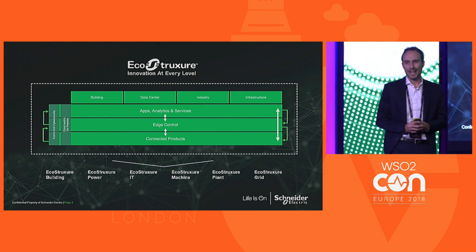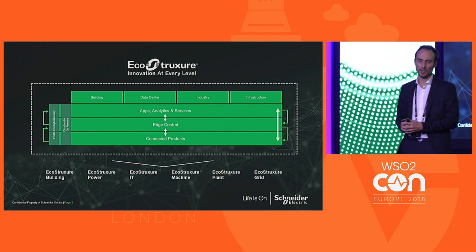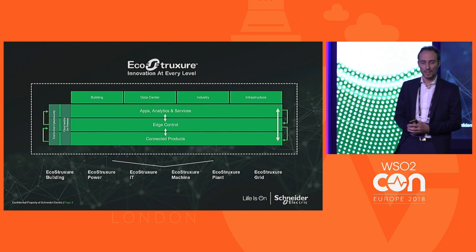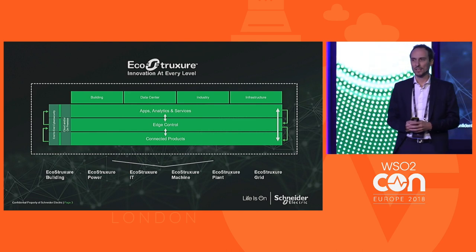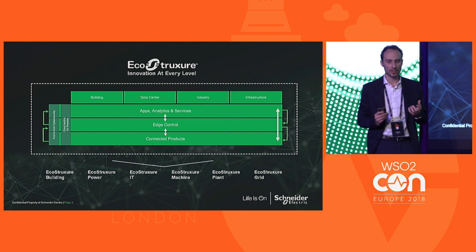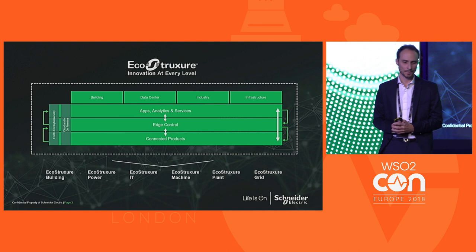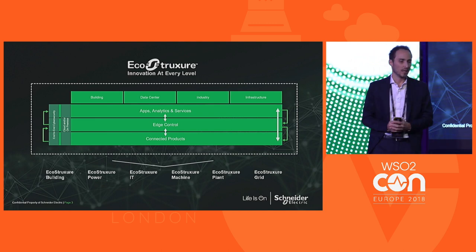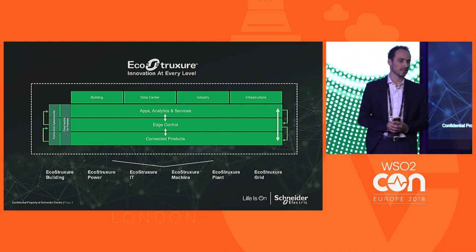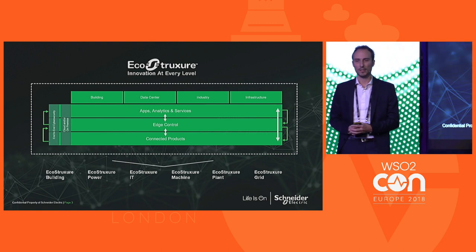Edge control is about end-to-end solutions, keeping local control so that we can guarantee uptime and safety for critical products. Apps, analytics, and services is about integrating hardware and software together, gathering data for benchmarking, simulation, and part-end recognition, so we can have early symptom warnings. We are innovating in all three layers to propose end-to-end solutions to four main end markets: buildings — both residential and non-residential — data centers, industry, and infrastructure.